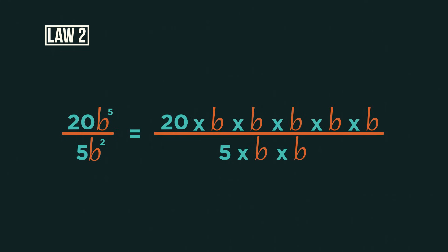Just as you do when you simplify fractions, we can cancel down our numbers and our letters. So we cancel the twenty and the five to become four and we start by cancelling out the b's. So to divide indices, we divide the numbers and we subtract the powers.